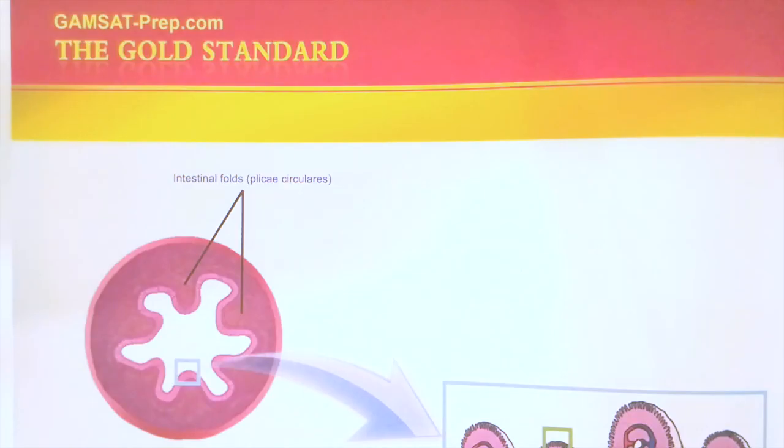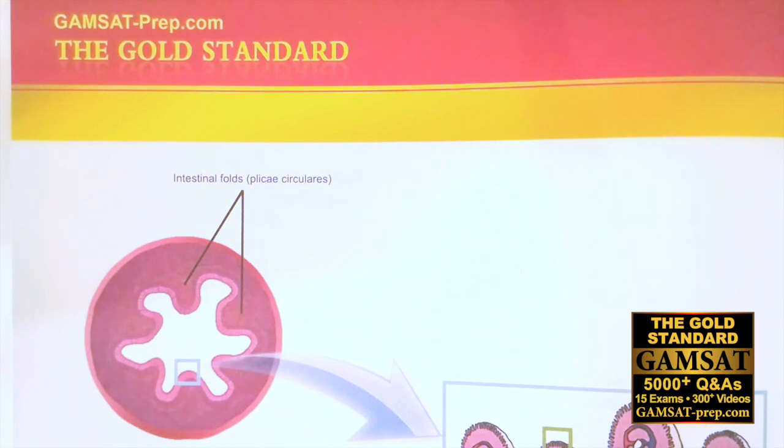Questions 94 to 98. Gluten-induced celiac disease is an autoimmune disorder that destroys the architecture of the small intestine. Here it is, a cross-section of the small intestine from Gold Standard GAMSAT book 3, bio 9.5.